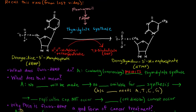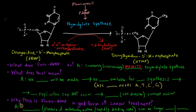What that means is that no dTMP will be made. If this enzyme can't work, we won't make dTMPs. If no dTMPs are made, we can't have T's available for DNA synthesis — we can't make DNA, because DNA requires A's, T's, C's, and G's. So DNA replication cannot occur, which means mitosis and cell division cannot occur.